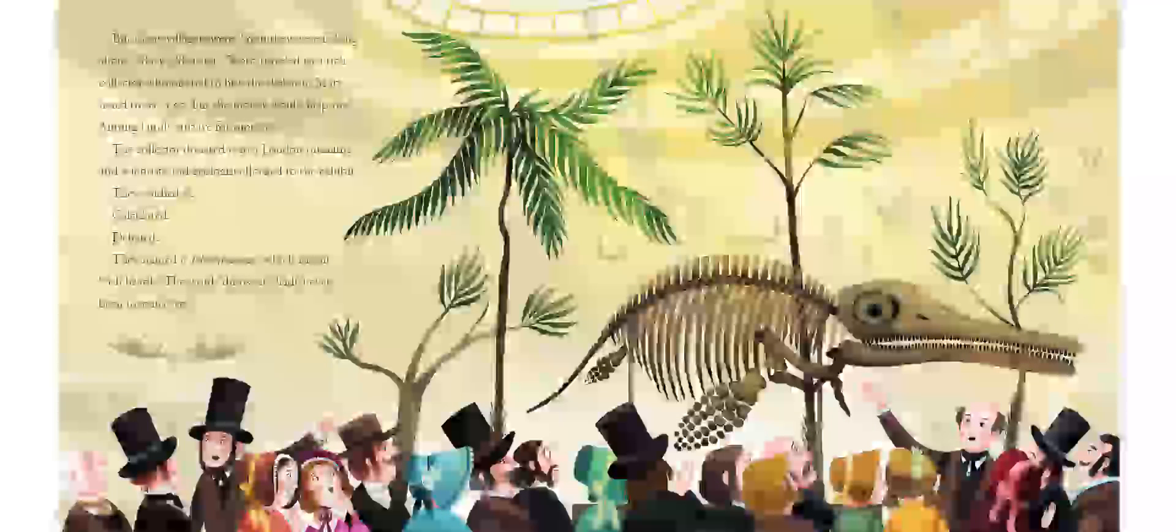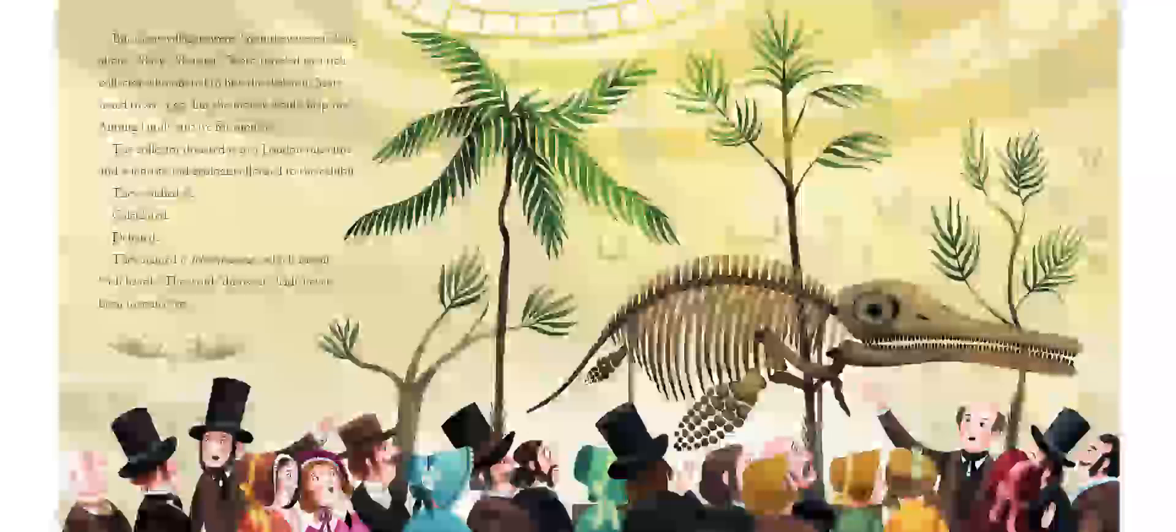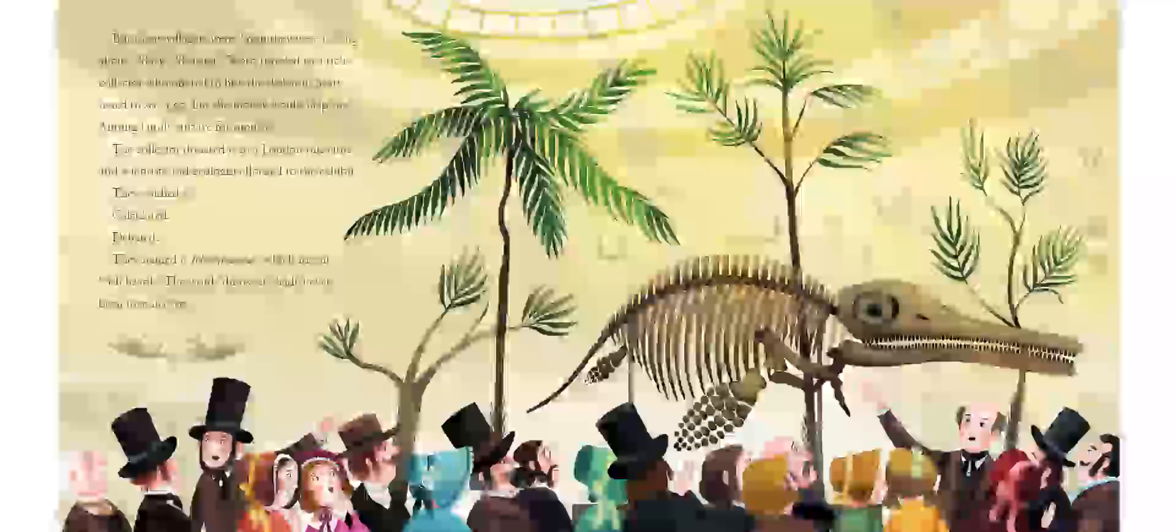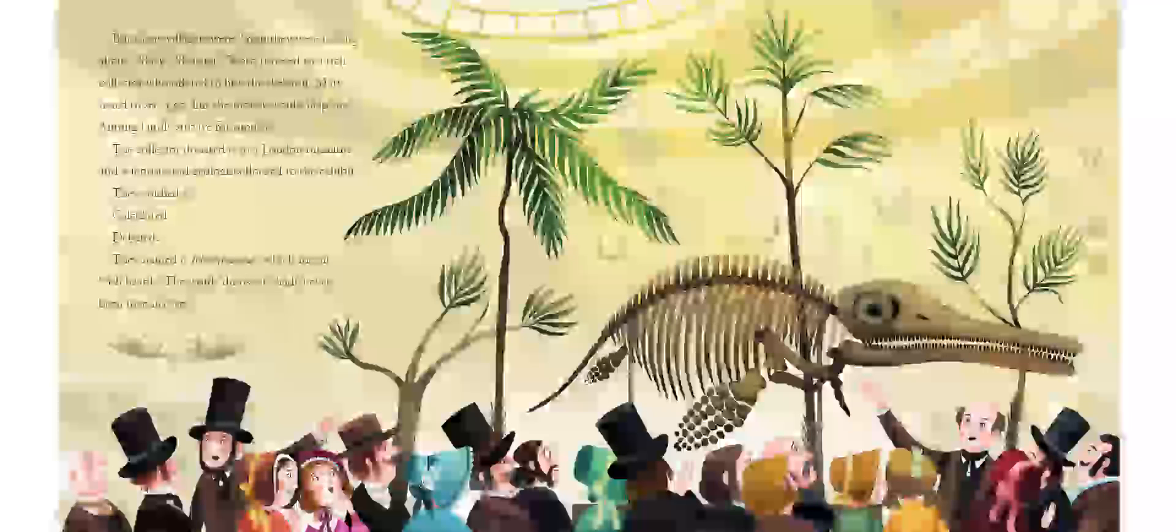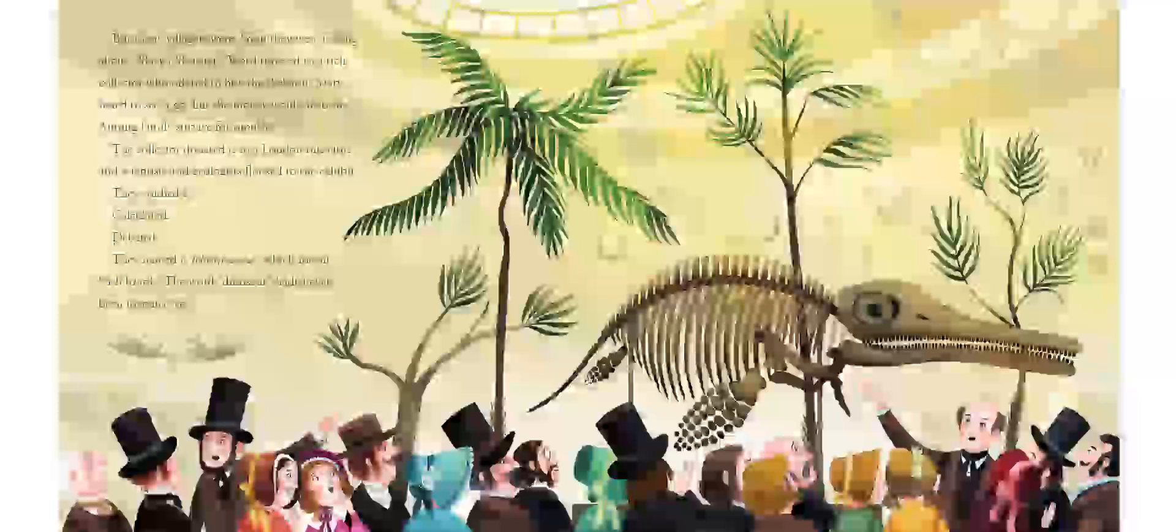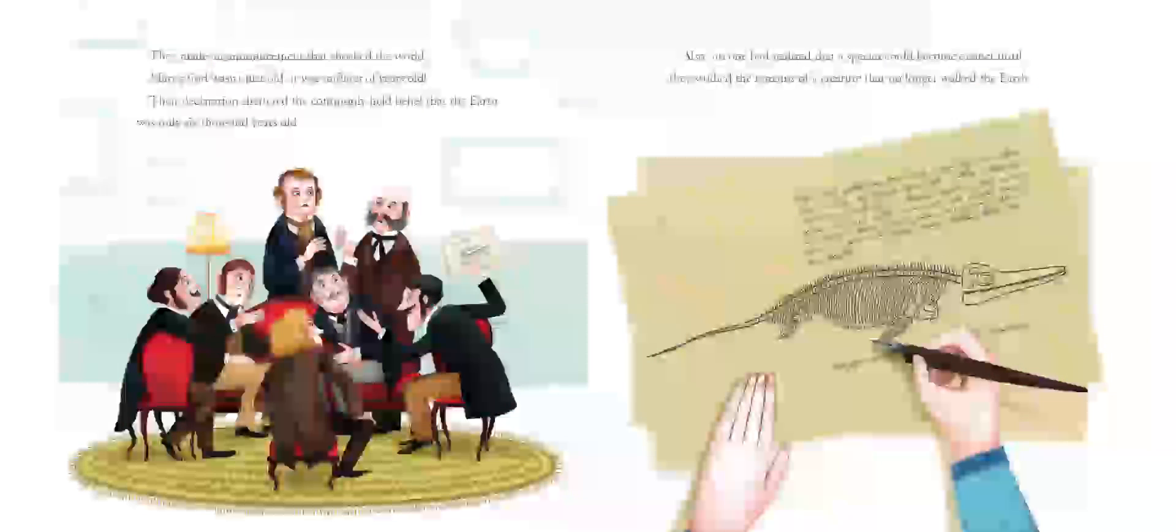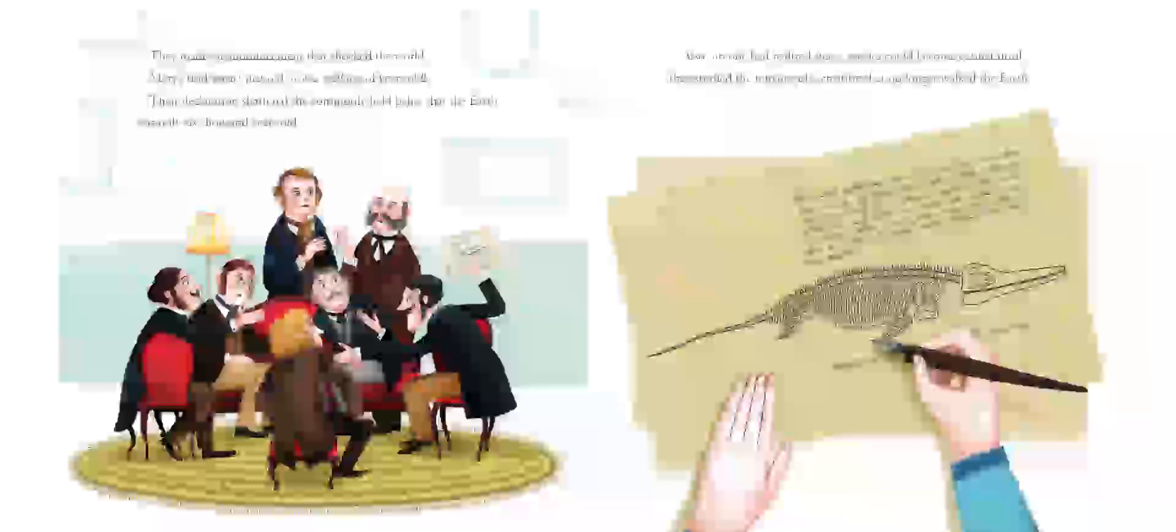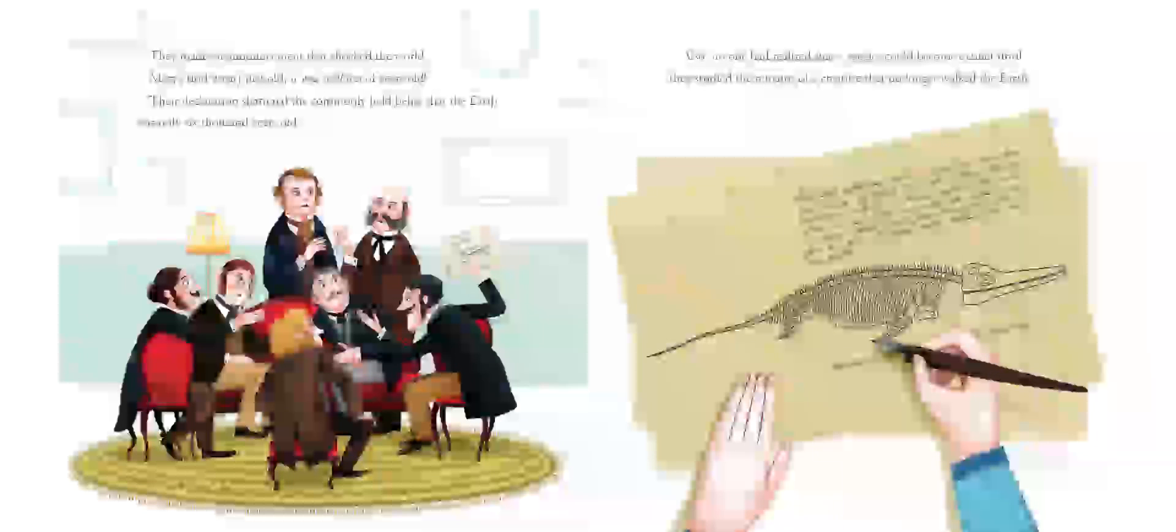Word traveled to a rich collector who offered to buy the skeleton. Mary hated to see it go, but the money would help the Anning family survive for months. The collector donated it to a London museum, and scientists and geologists flocked to the exhibit. They studied it, calculated, debated. They named it Ichthyosaurus, which means fish lizard. The word dinosaur hadn't even been invented yet. They made an announcement that shocked the world. Mary's find wasn't just old. It was millions of years old. Their declaration shattered the commonly held belief that the Earth was only 6,000 years old. Also, no one had realized that a species could become extinct until they studied the remains of a creature that no longer walked the Earth.